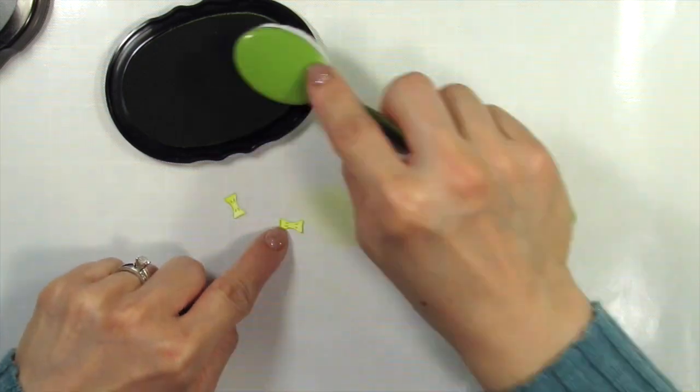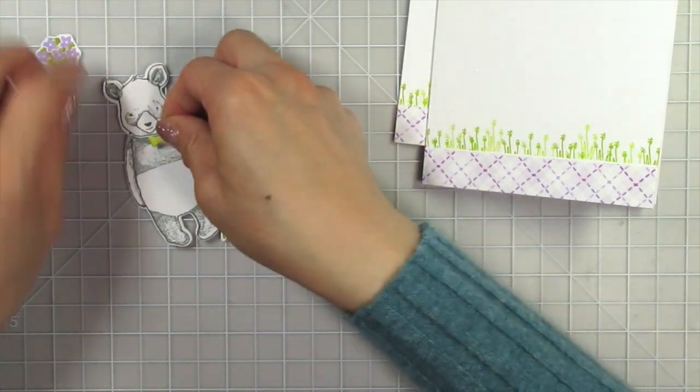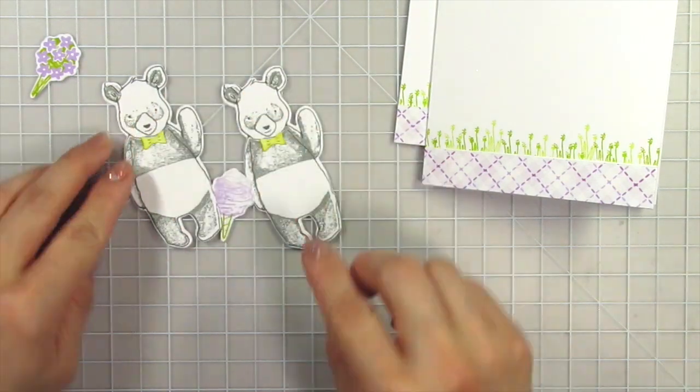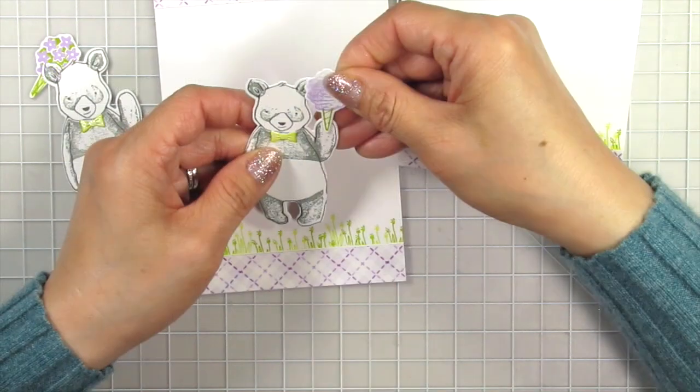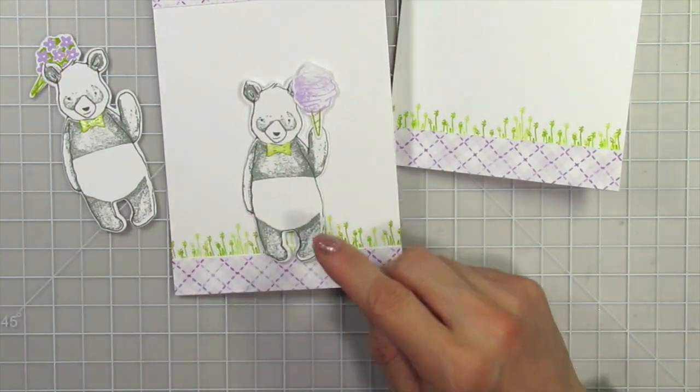To add a bit more green on the card I die cut two of these little bows from the Hi There Bear dies and sponge them with bamboo and Parrot inks. Then I attach them to the pandas with glue dots. I use a clear sparkle pen to add shimmer to the bow ties.